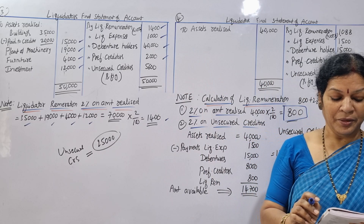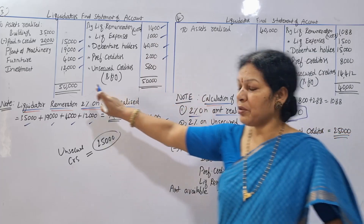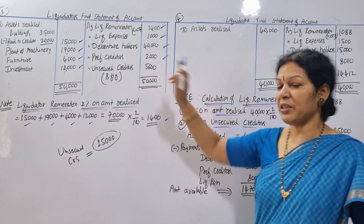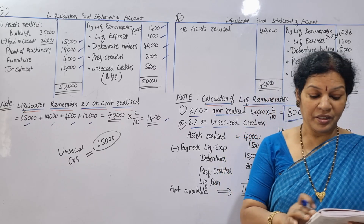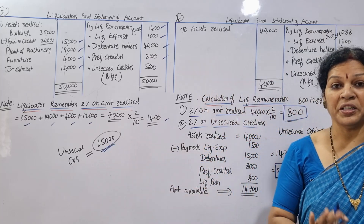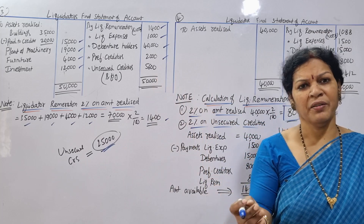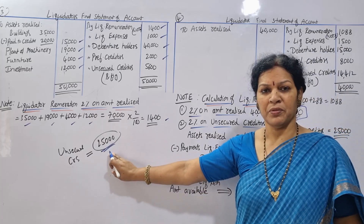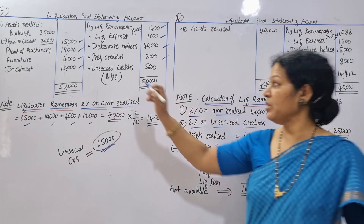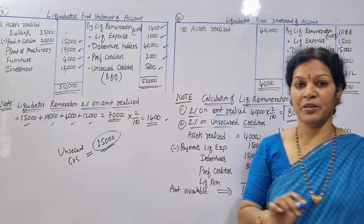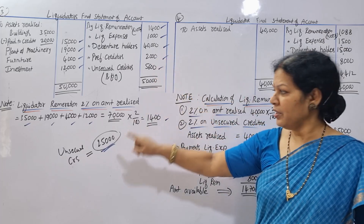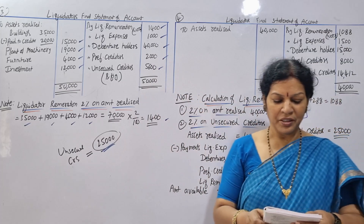$20,000 and $2,000. After that, we have the amount of $50,000 which will be deducted, leaving $5,600. Unsecured creditors are $25,000, but the available amount is $5,600. So $5,600 is paid to unsecured creditors.